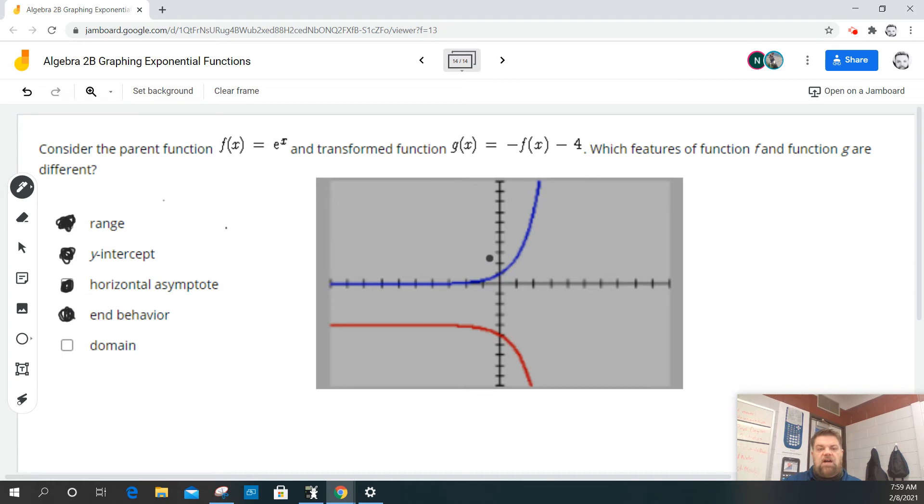Now, when they say end behavior, we're talking about what it does as it approaches x to positive infinity, right? So this one here, f of x goes to positive infinity in the y direction, but g of x goes to negative infinity in the y direction as we approach x towards positive infinity. And because they have different horizontal asymptotes, then the end behavior is different here. f of x approaches 0 as you approach negative infinity in the x direction.